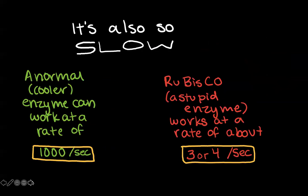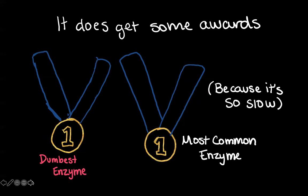It's also a really slow enzyme. Most enzymes can work at a rate of about a thousand per second, some more, some less. But rubisco works at a rate of about three or four per second, which is ridiculously slow.